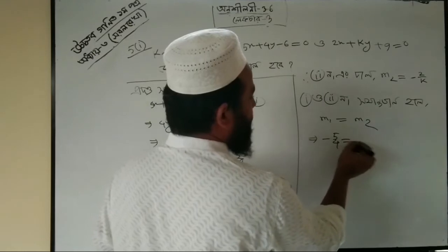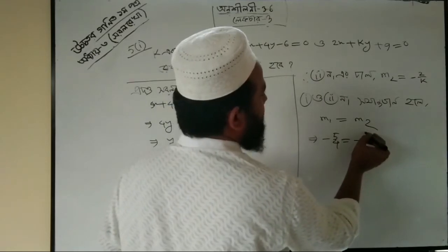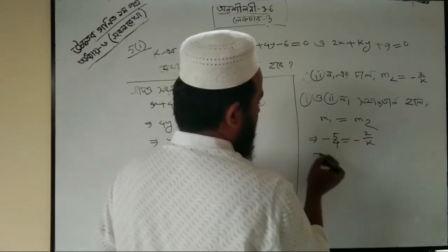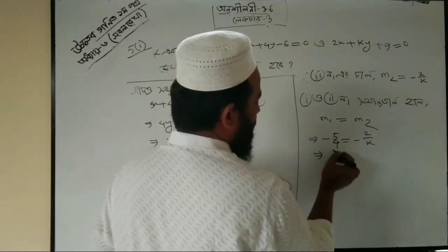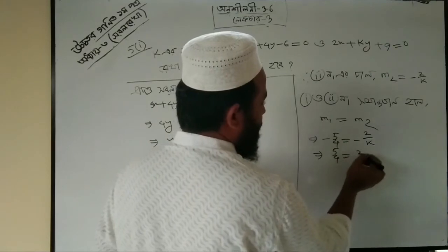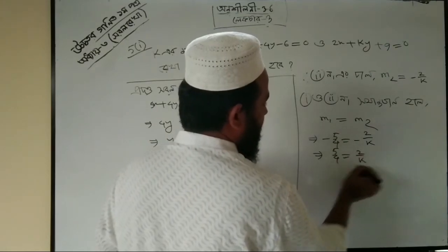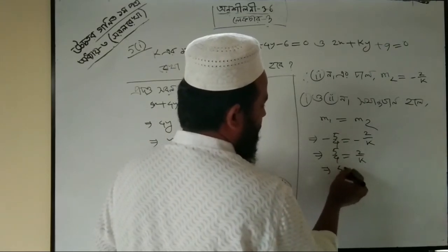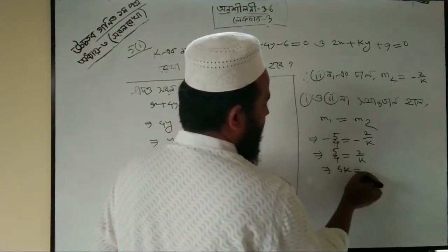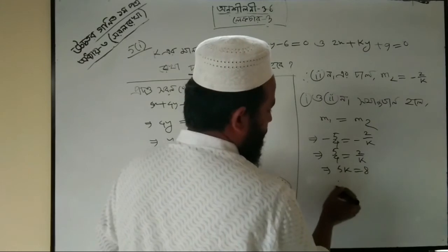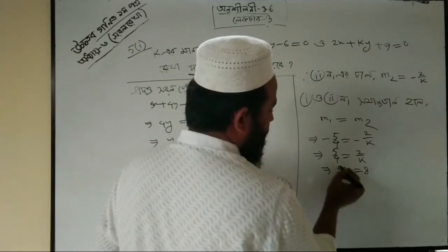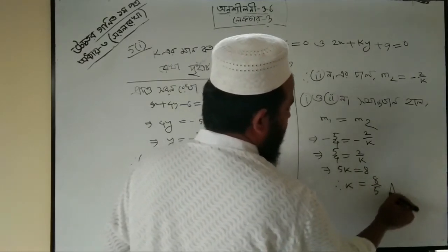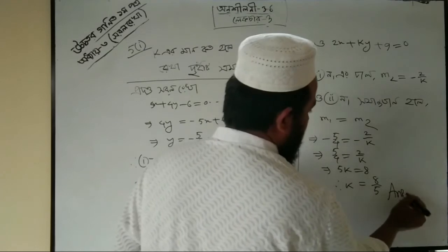Now, for the lines to be parallel, m₁ equals m₂. So minus 5 by 4 equals minus 2 by k, giving us 5k equals 8. Therefore k equals 8 divided by 5. This is the answer.